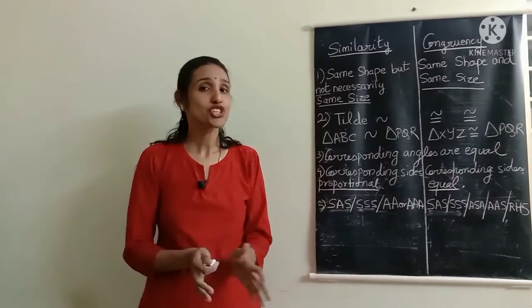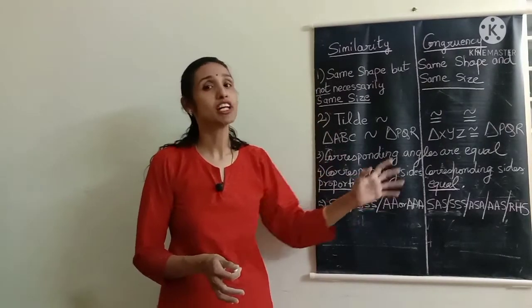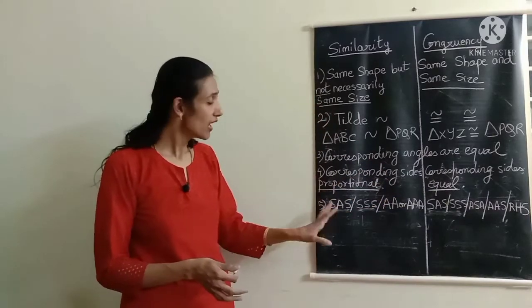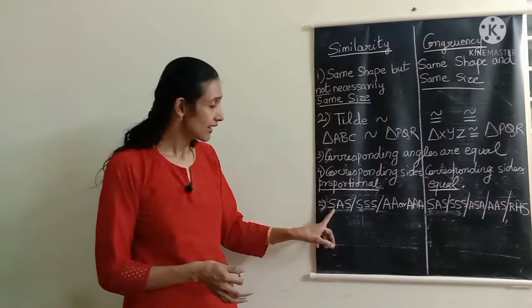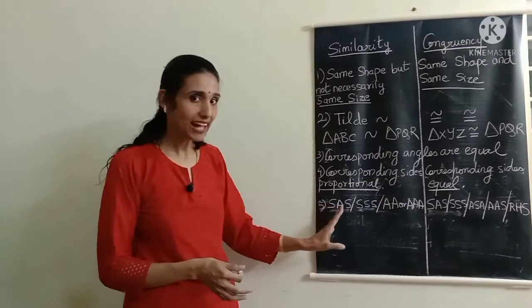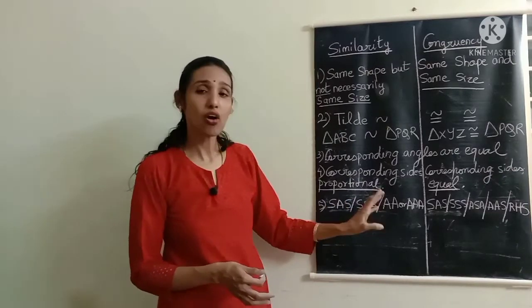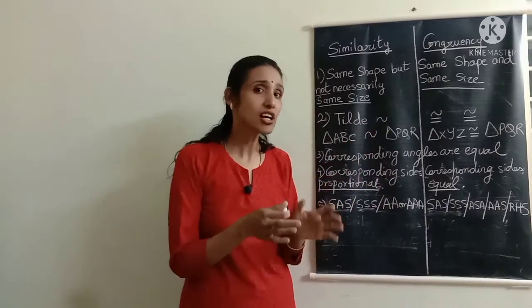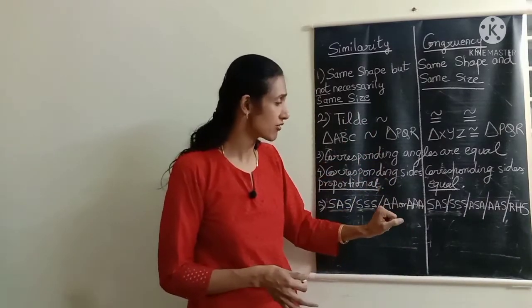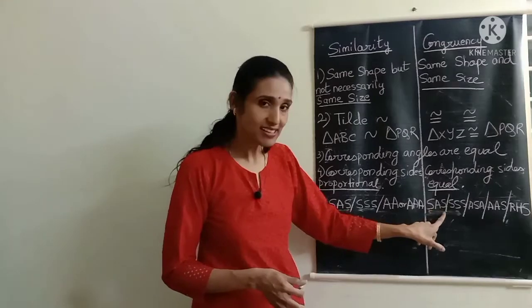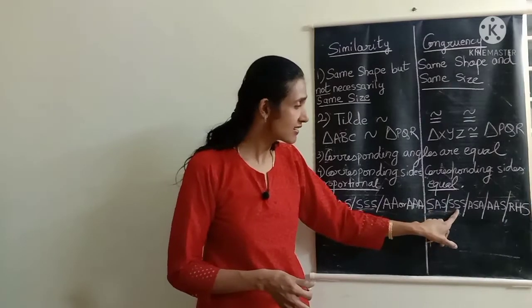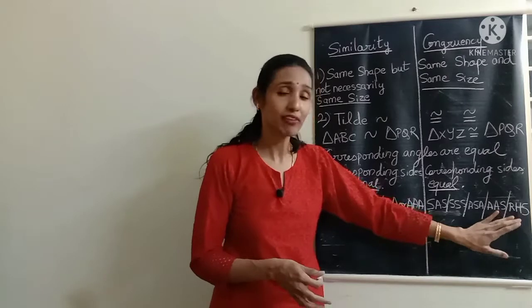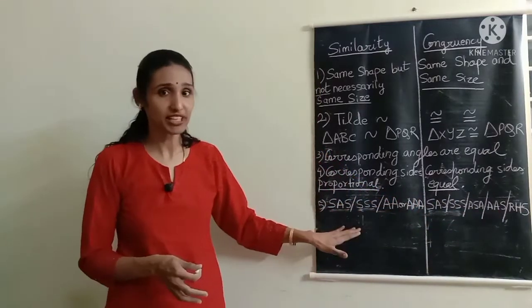To prove if two triangles are similar, we have three criteria: SAS (side-angle-side), SSS, or AA. Whereas to show if two triangles are congruent, we have five criteria: SAS, SSS, ASA, AAS, or RHS. So there are five criteria for congruency and three for similarity.